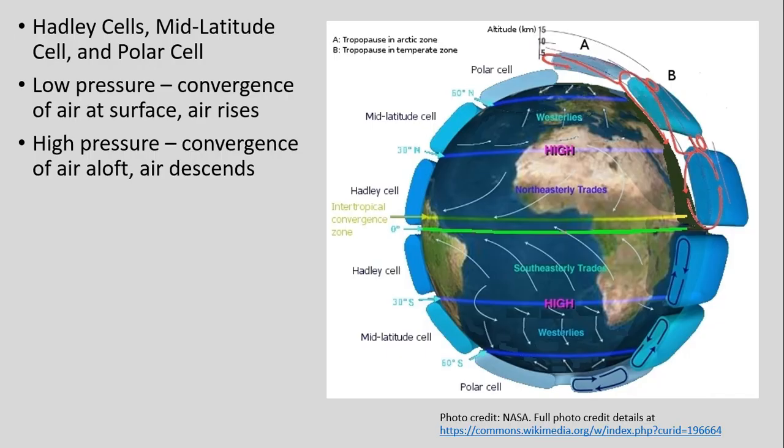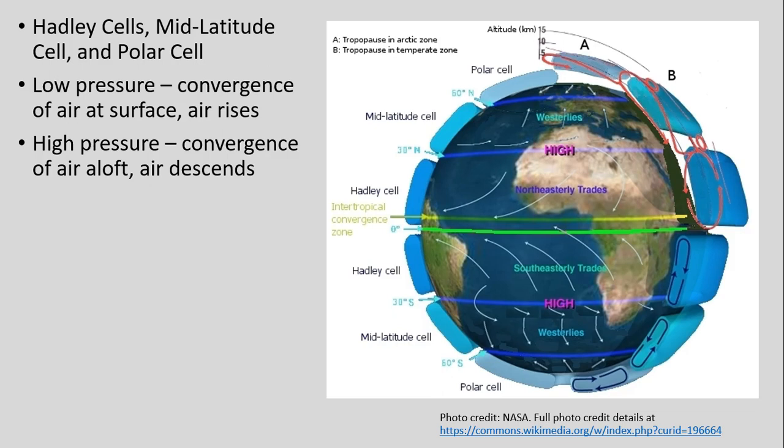Just a little review: we have our Hadley cells, mid-latitude cells, and polar cells, and we've talked about the difference between low and high pressure between them. Low pressure is convergence of air at the surface and that air is rising. High pressure is where we're having convergence of air aloft and that air is descending.